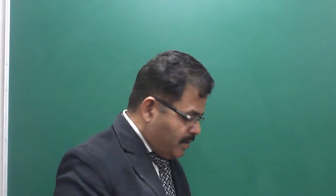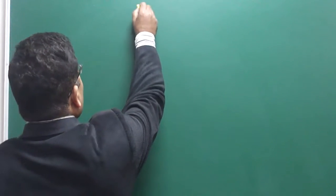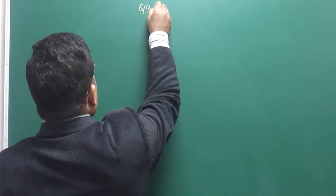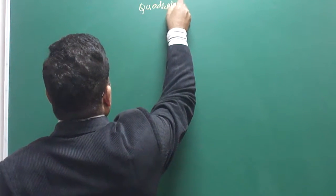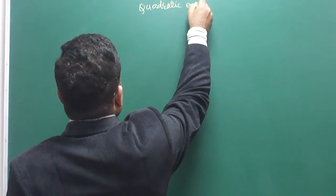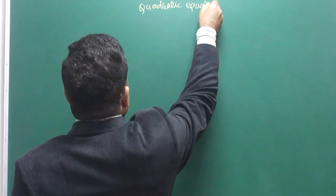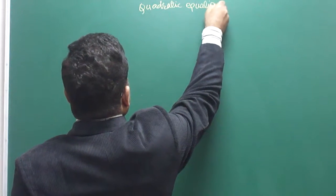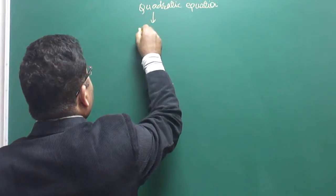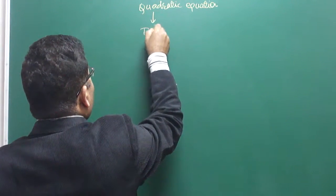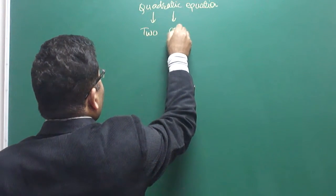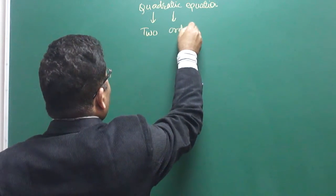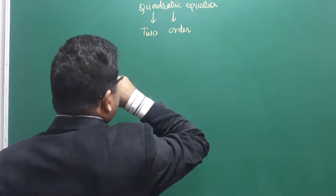What is a quadratic equation? 'Qua' means two, and 'quadratic' means order or degree.